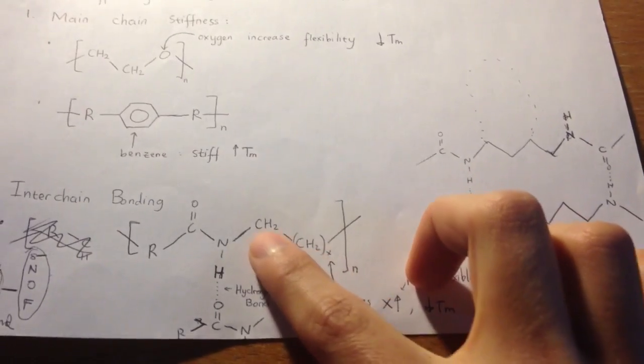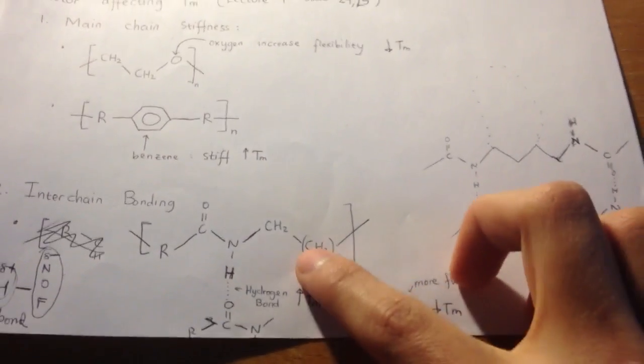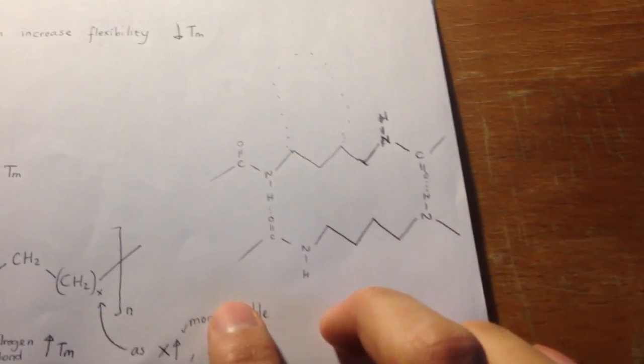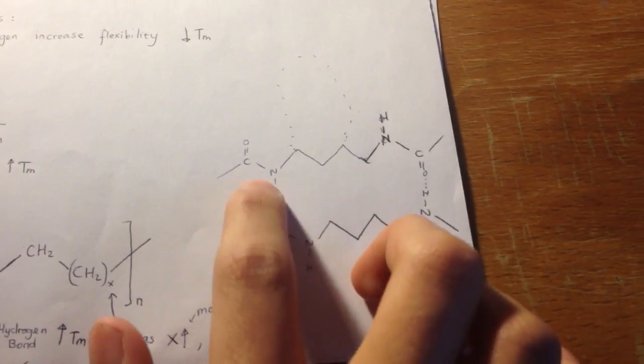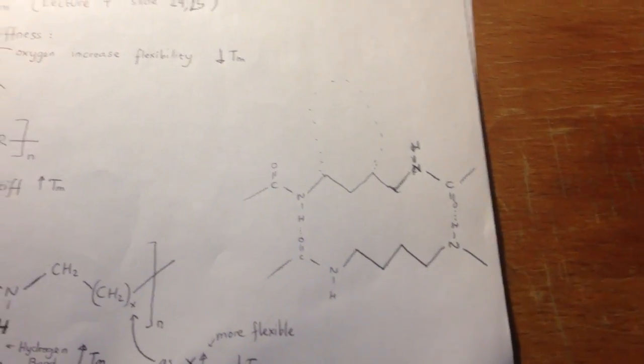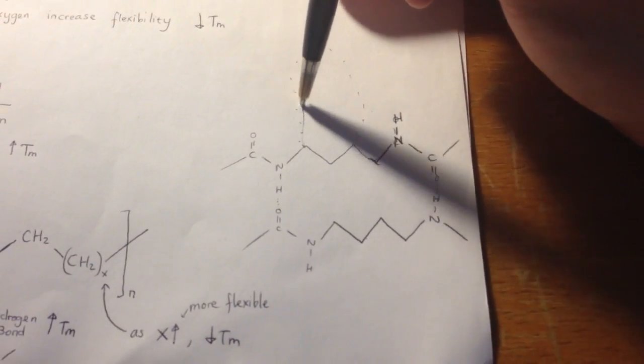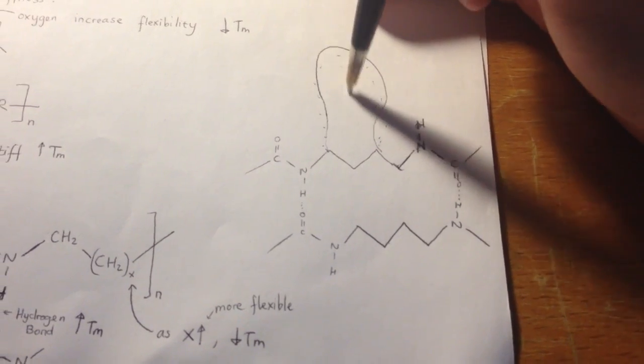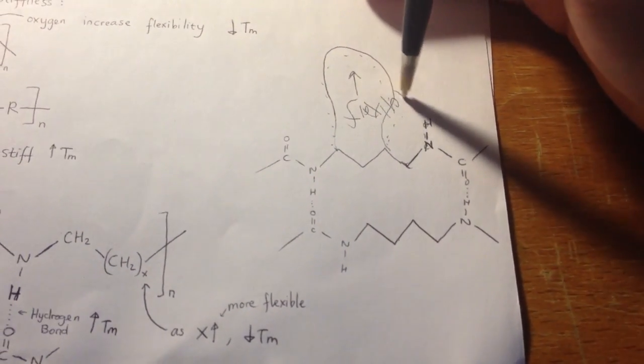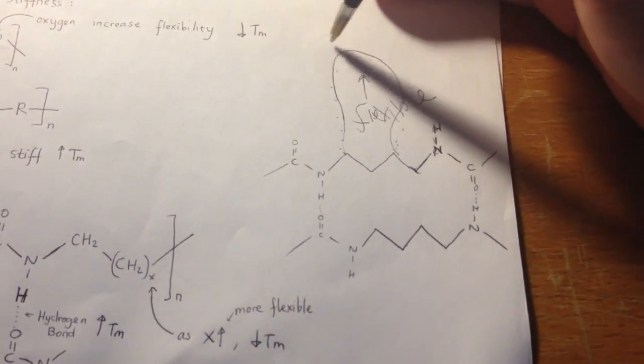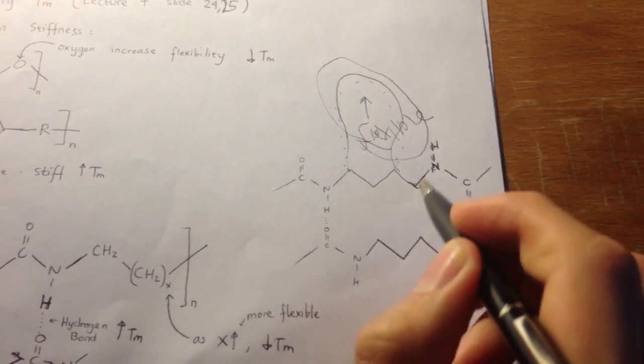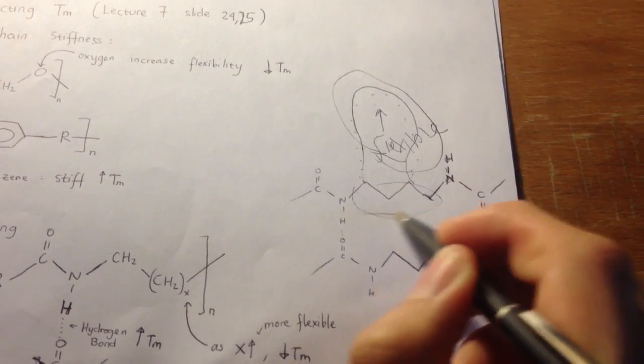If the carbon here, I put X. When X increases, it will be more flexible and the melting point will decrease. To illustrate this, imagine this is stiff. If this makes the bond stiff, and if I have a chain that is long here, this part will be flexible. And this will decrease the melting point. If it's only small amount, it will be stiff.